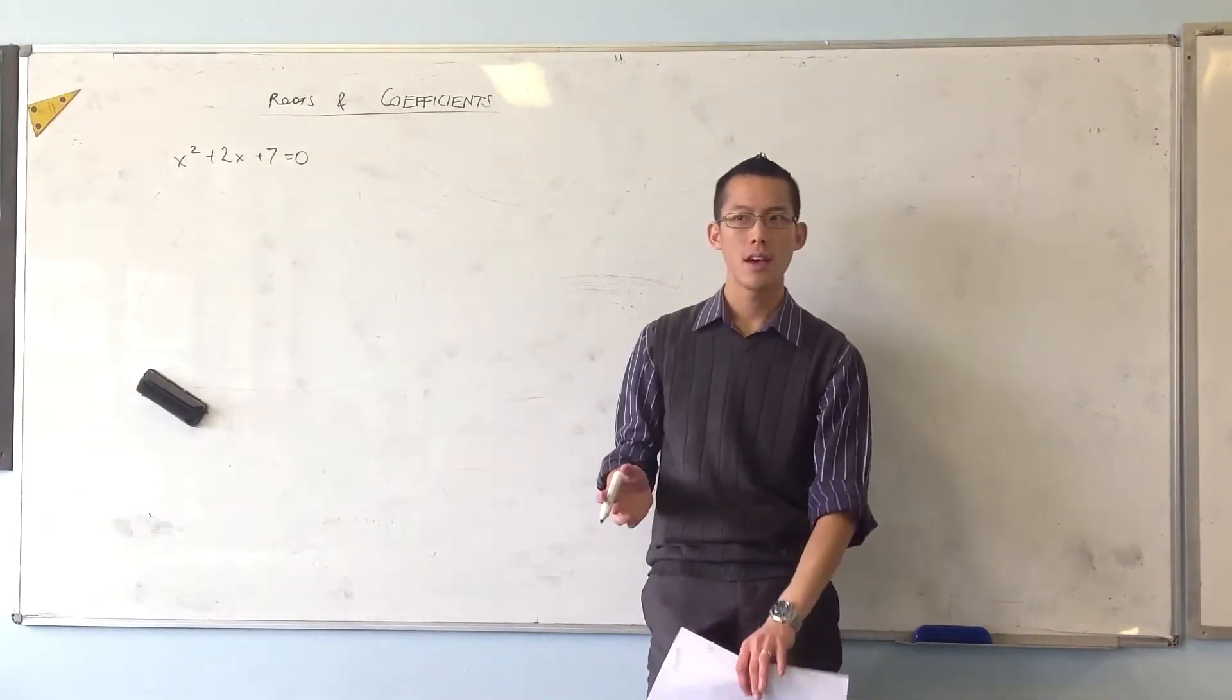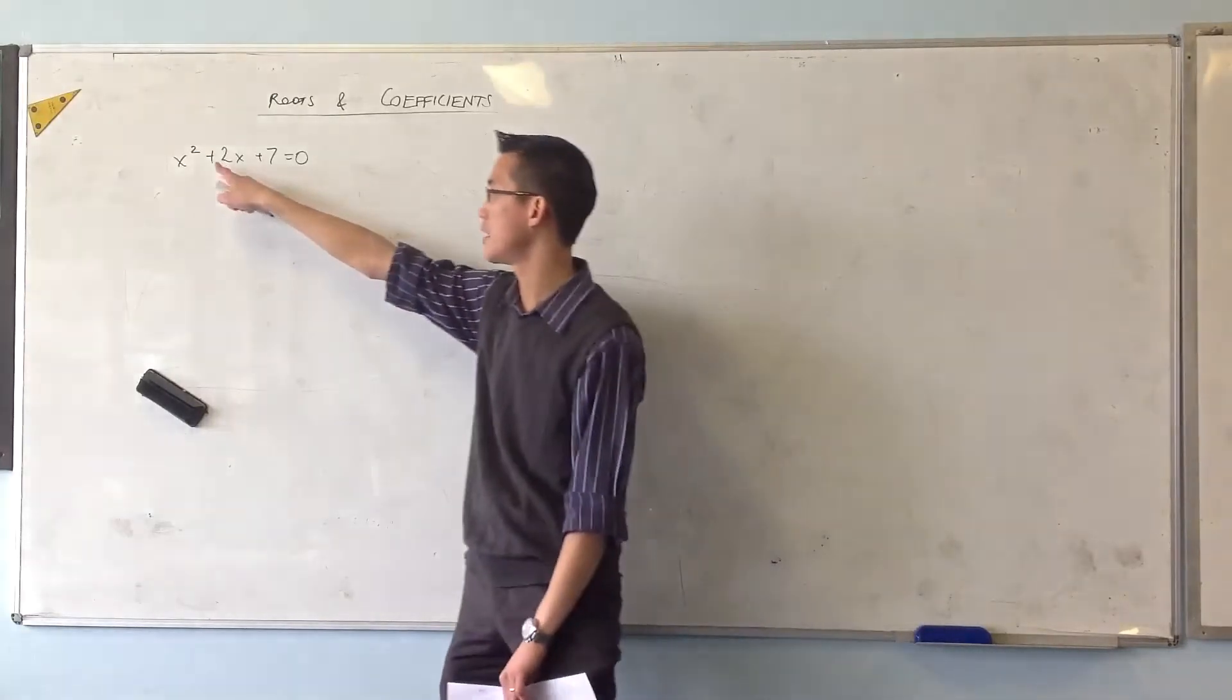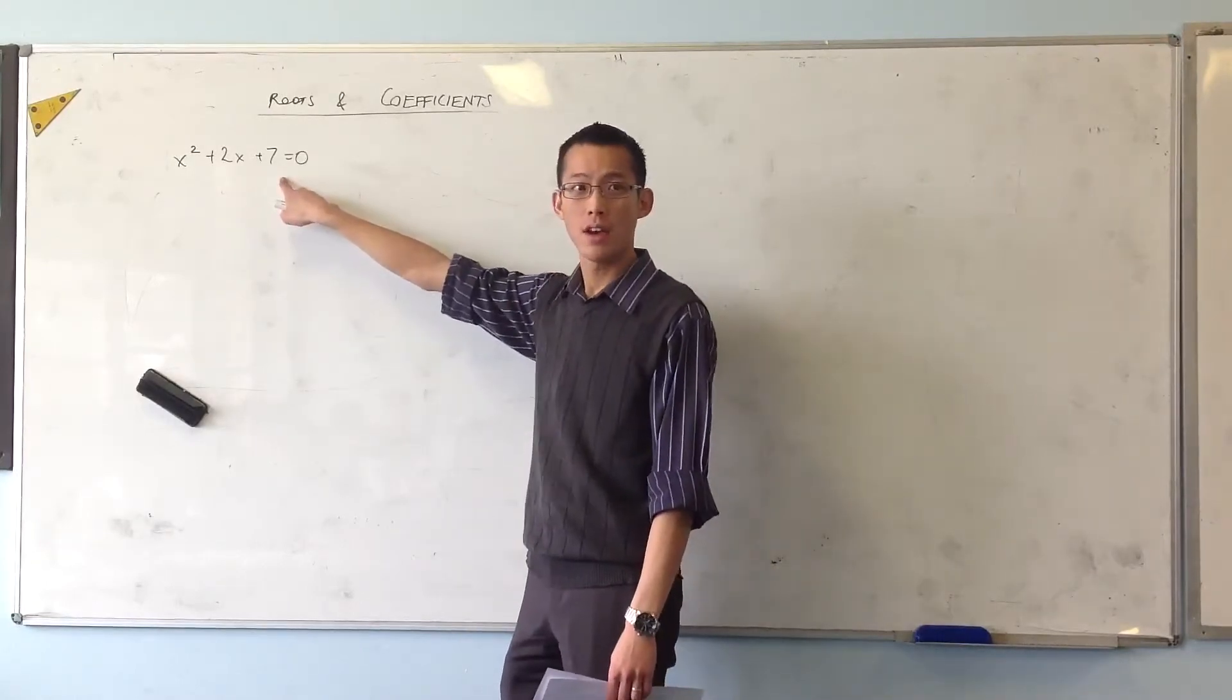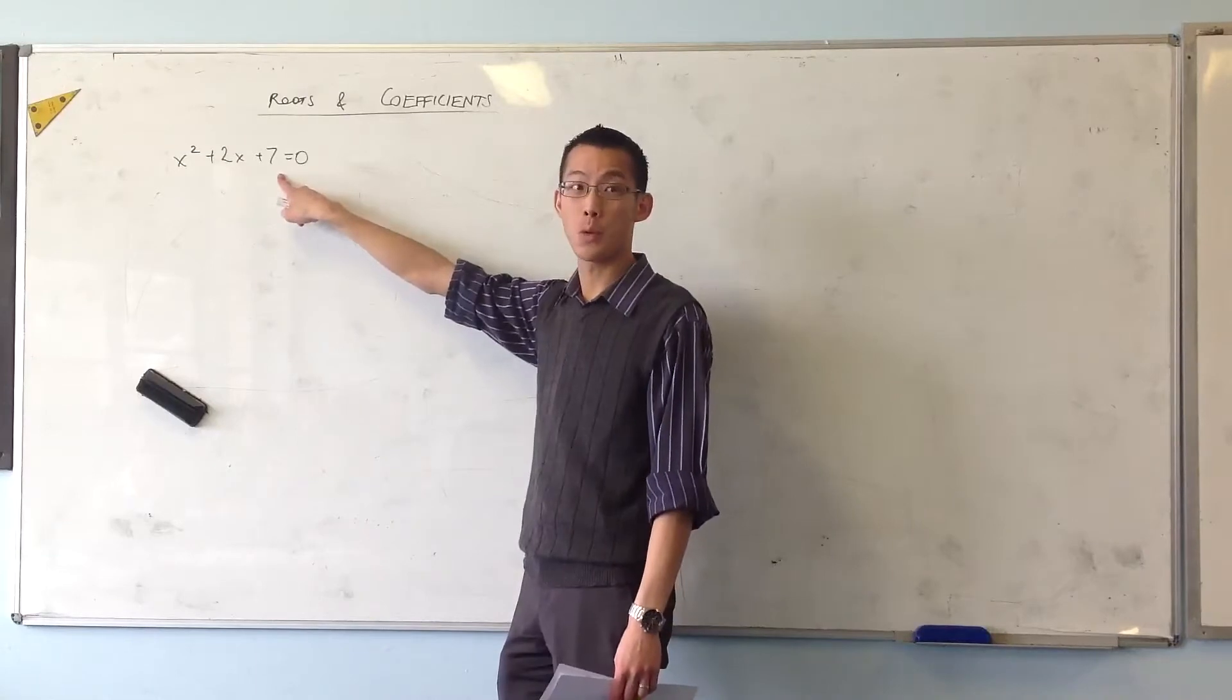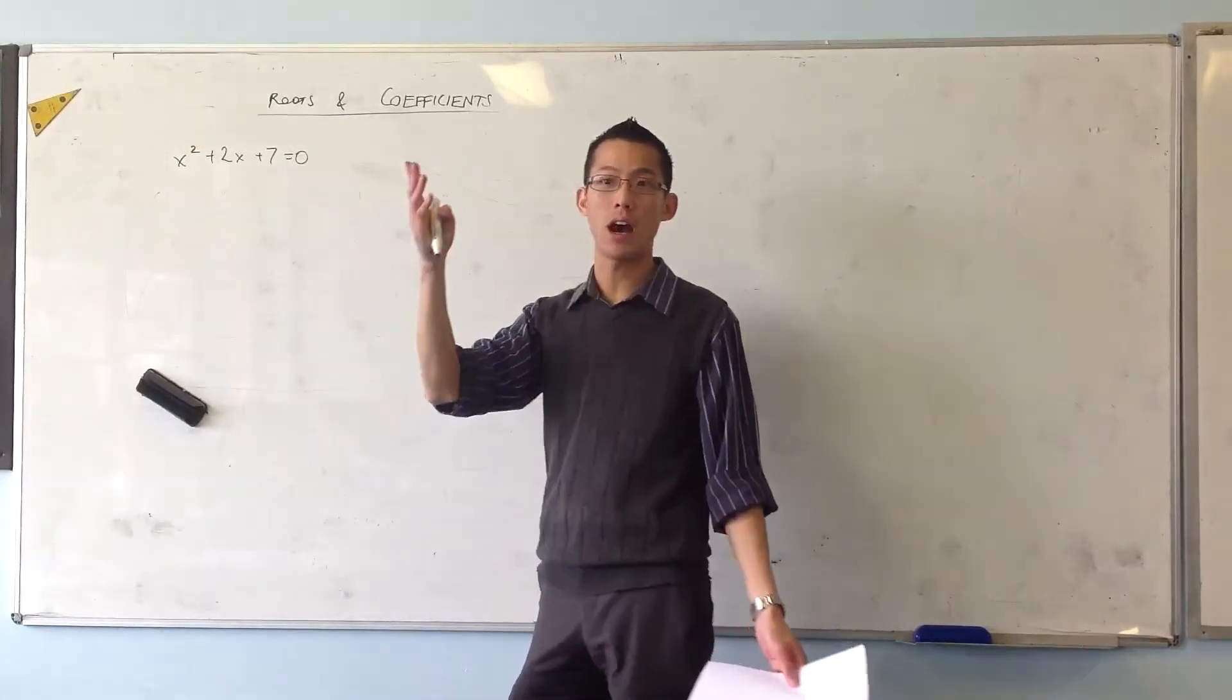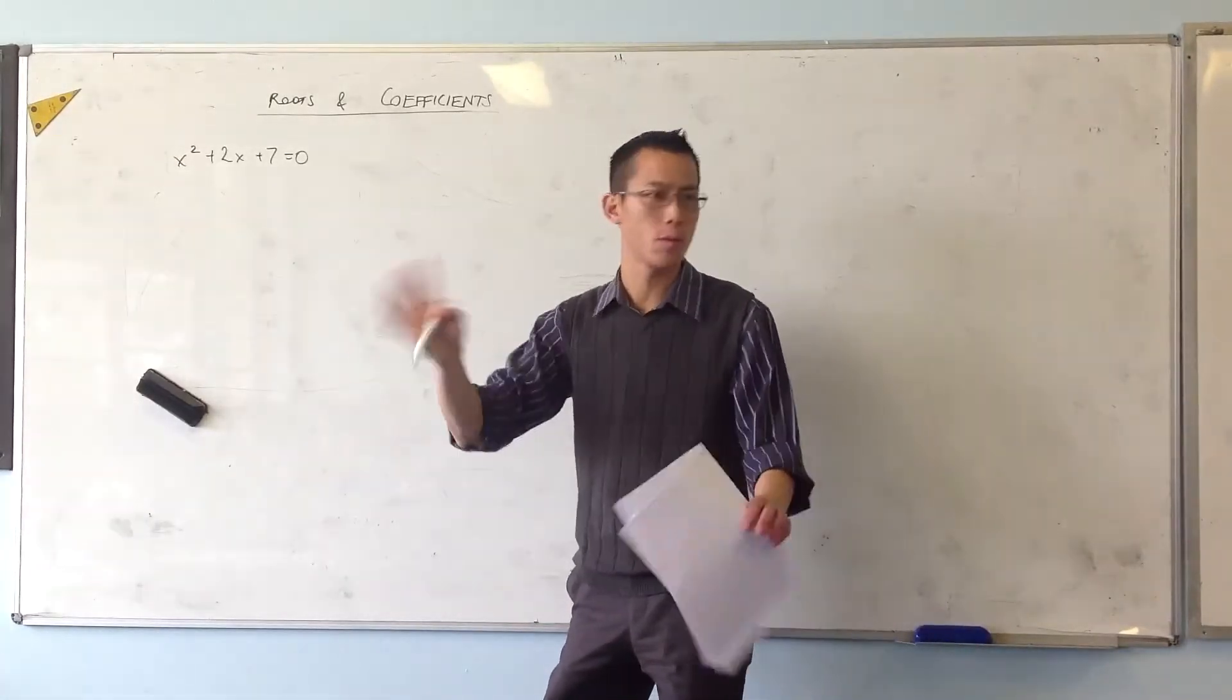But you can already see, thinking about the discriminant, right, the discriminant is b squared minus 4ac. Being that b squared is just 4 and 4ac is going to be 28, clearly the discriminant is going to be negative, which tells you that the roots are not real or complex.